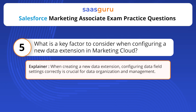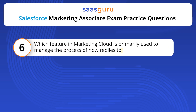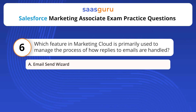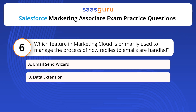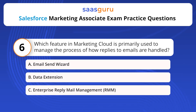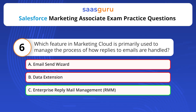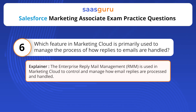When creating a new data extension, configuring data field settings correctly is crucial for data organization and management. Which feature in Marketing Cloud is primarily used to manage the process of how replies to emails are handled? Options: Email Send Wizard, Data Extension, Enterprise Reply Mail Management (RMM). The answer is option C. The Enterprise Reply Mail Management (RMM) is used in Marketing Cloud to control and manage how email replies are processed and handled.